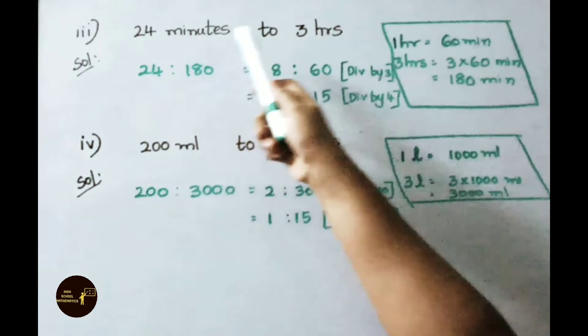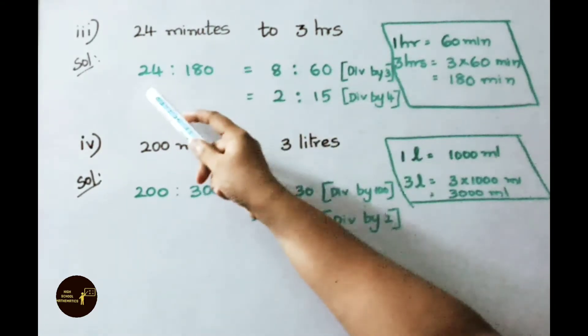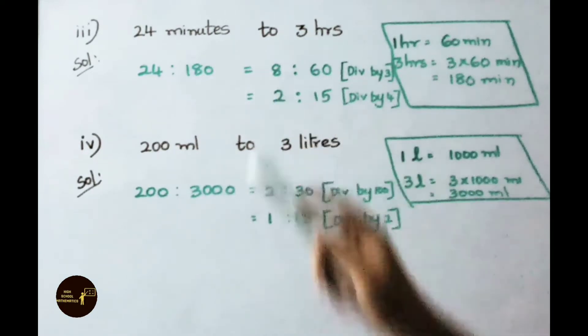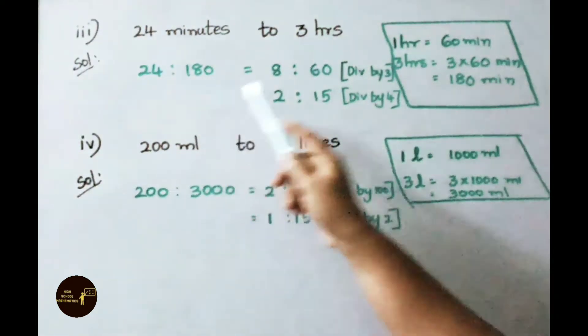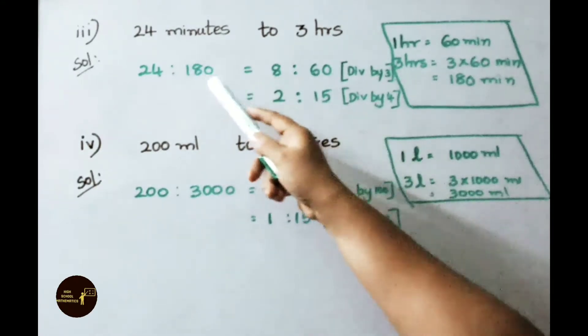See the third sum, 24 minutes to 3 hours. We know 1 hour equals to 60 minutes. 3 hours equals to 3 into 60 minutes that is 180 minutes. So the ratio is 24 is to 180. That equals to on dividing both terms by 3, 3 table 24 is 8 times and 180 is 60.